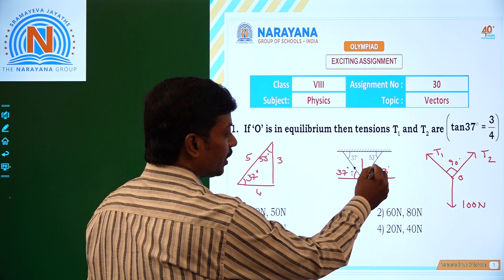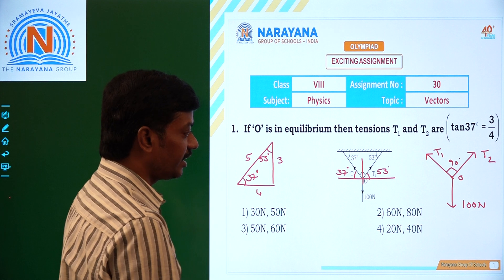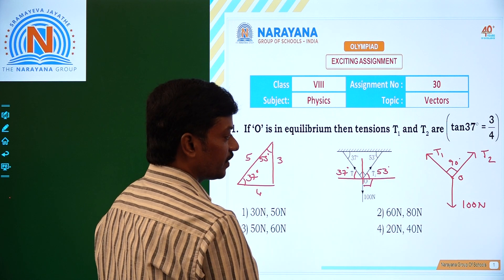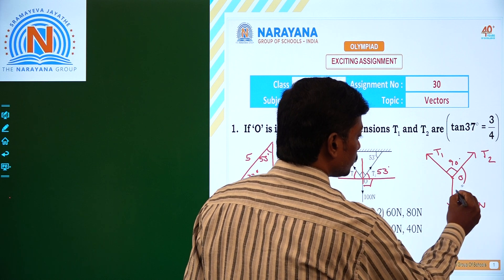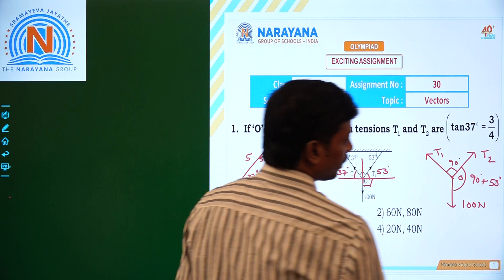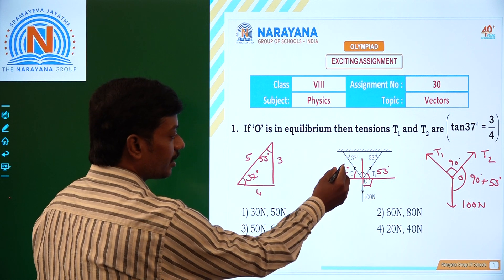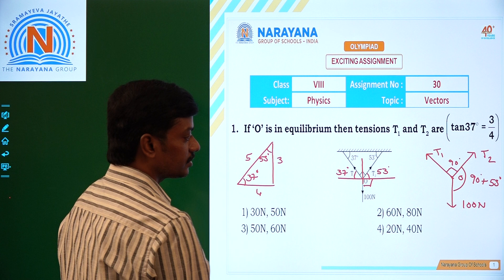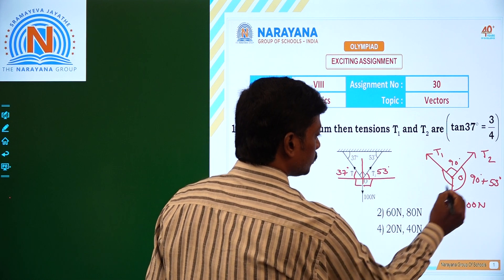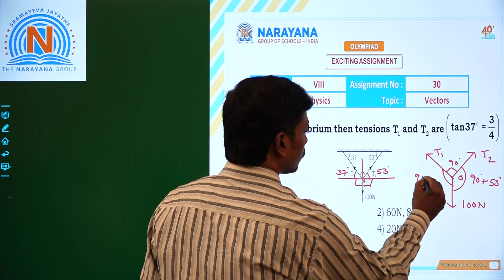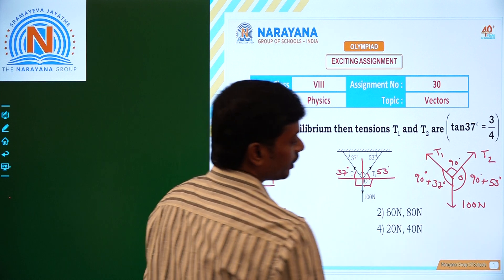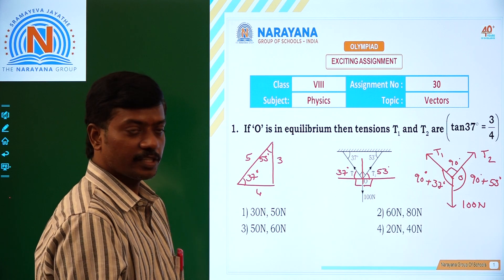The total angle between T2 and 100 newtons is 90 plus 53 degrees. And the total angle between T1 and 100 newtons is 37 and 90 degrees, so this is 90 plus 37 degrees. So let's take the help of Lamy's theorem.